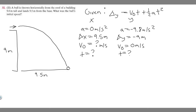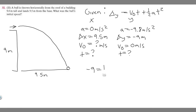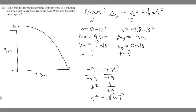Plugging in our values: minus 9 equals v sub zero, which is zero in the y direction, times t — but zero times any number is zero, so that term drops out. So it's one half times a, which is minus 9.8, times t squared. That gives us minus 4.9 times t squared. Dividing both sides by minus 4.9, we get t squared equals minus 9 divided by minus 4.9, which equals 1.8367. Taking the square root, t equals 1.355 seconds.